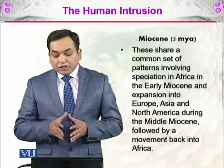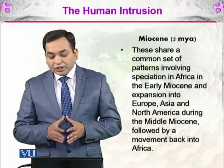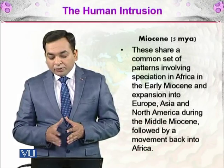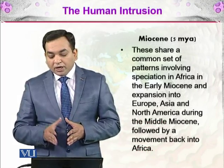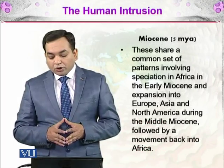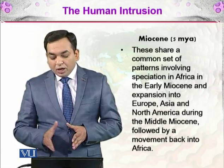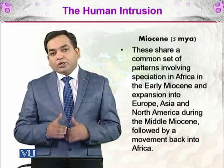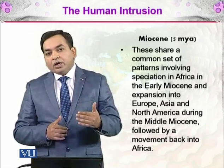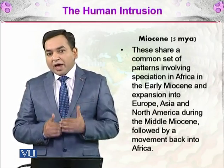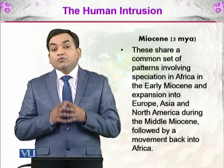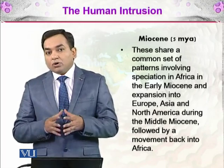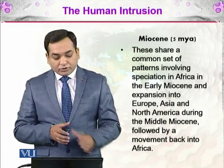These groups share a common set of patterns involving speciation in Africa during the early Miocene, followed by expansion into Europe, Asia, and North America during the middle Miocene, and then movement back into Africa. First they go out into Asia and Europe, and then they come back — and hominids follow the same pattern as all the other animals discussed.